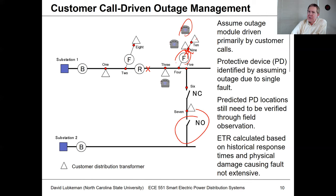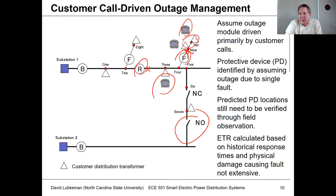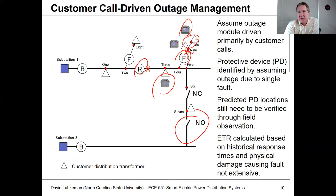Utilities want people to call in quickly — the faster they call, the better — because the utility is trying to figure out the nearest upstream protection device that operated. If only the customers below the fuse call, they ascertain it's a fuse. If those customers call in plus another customer on the main feeder, we start to deduce it would be a recloser. Most outage management systems assume just one protective device is causing the fault, which makes it harder to track multiple simultaneous outages during storms.